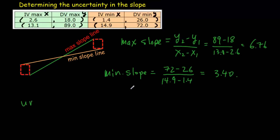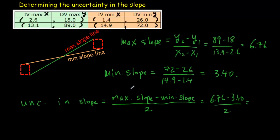And that means our uncertainty in slope, which will equal max slope minus min slope over 2, has got to equal 6.76 minus 3.40 divided by 2, giving an uncertainty in the slope of about 1.7.